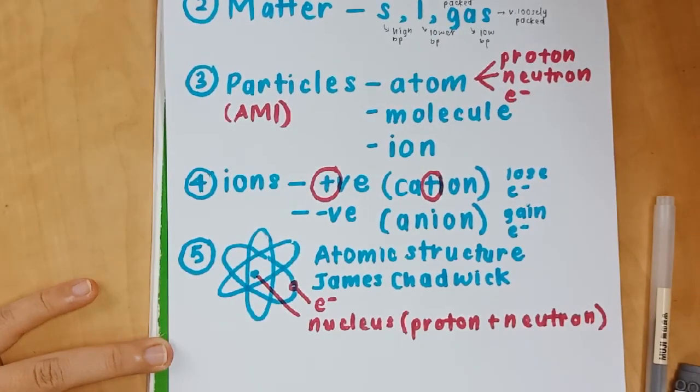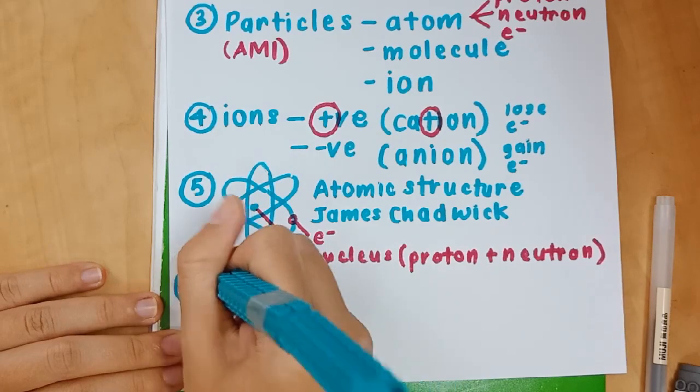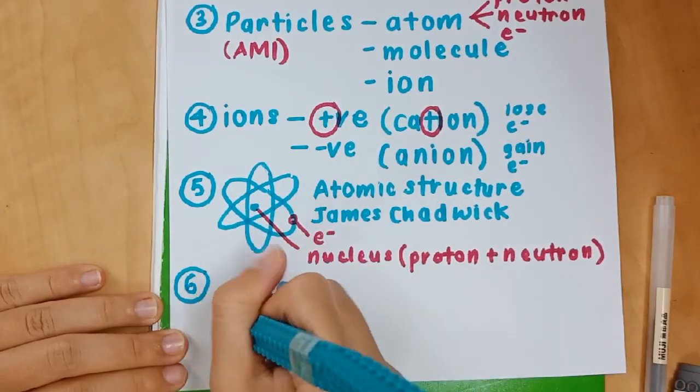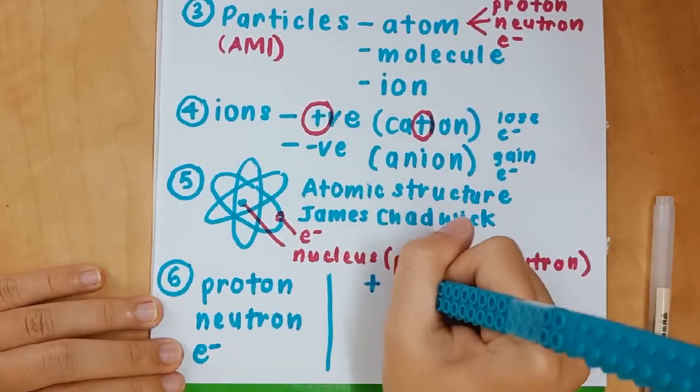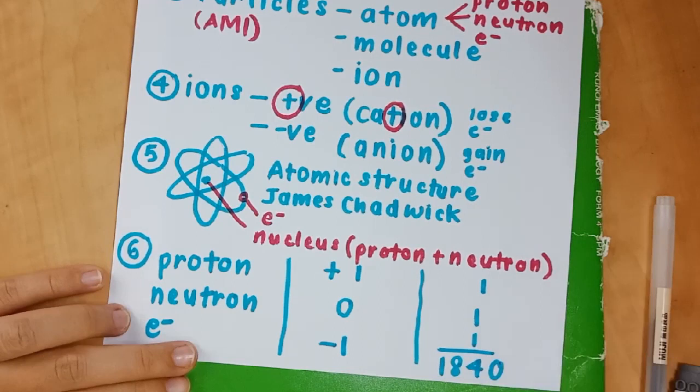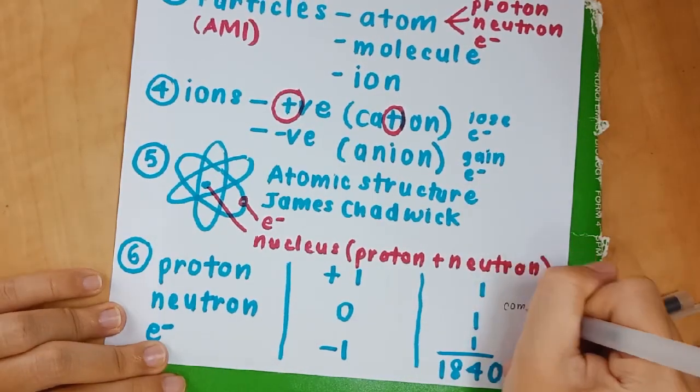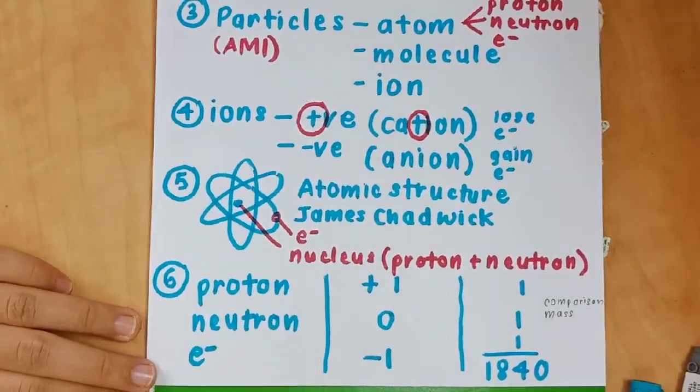The nucleus contains proton and neutron. Number six: you also need to know the relative masses and charges of proton, neutron, and electrons. Bear in mind that the mass provided is only relative mass - it's like the comparison between the three, not the actual mass.